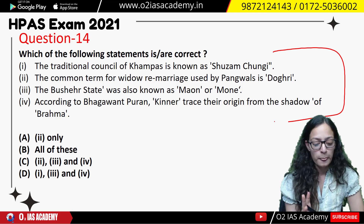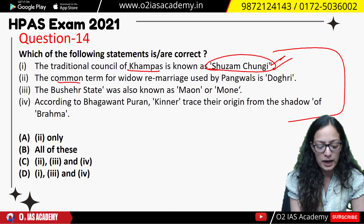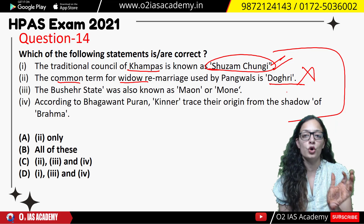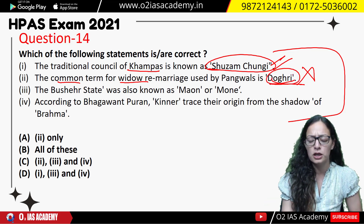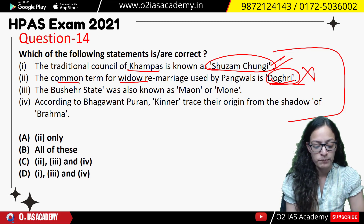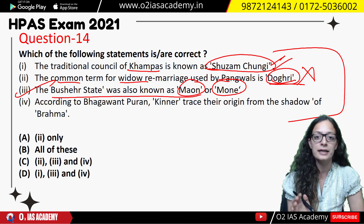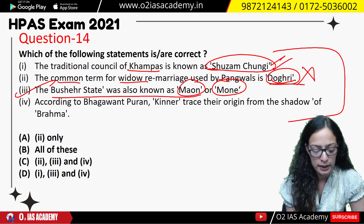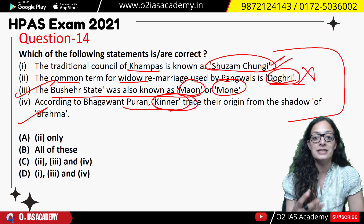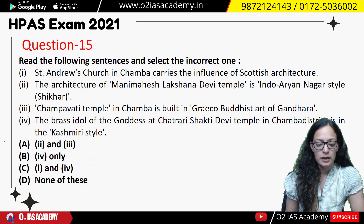Question 14 was from art and culture. Statements: traditional councils of Khampas are called Shuzam Chungi — correct; common term for widow remarriage in Pangwals is Dogri — incorrect (widow remarriage is called Topi Lana; Dogri is their normal type of marriage); Bushahar state is called Maan or Mone by Tibetans — correct (read in Kinnaur and Shimla chapters); it is mentioned in Bhagavat Puran that the Kinnara race emerged from Brahma's shadow — correct. So the answer was 'two only' — only the second statement was incorrect.